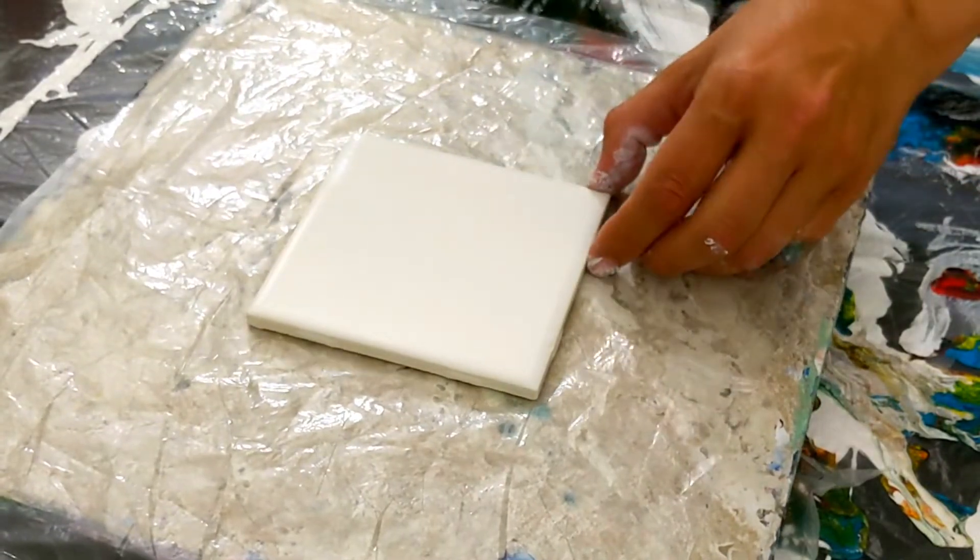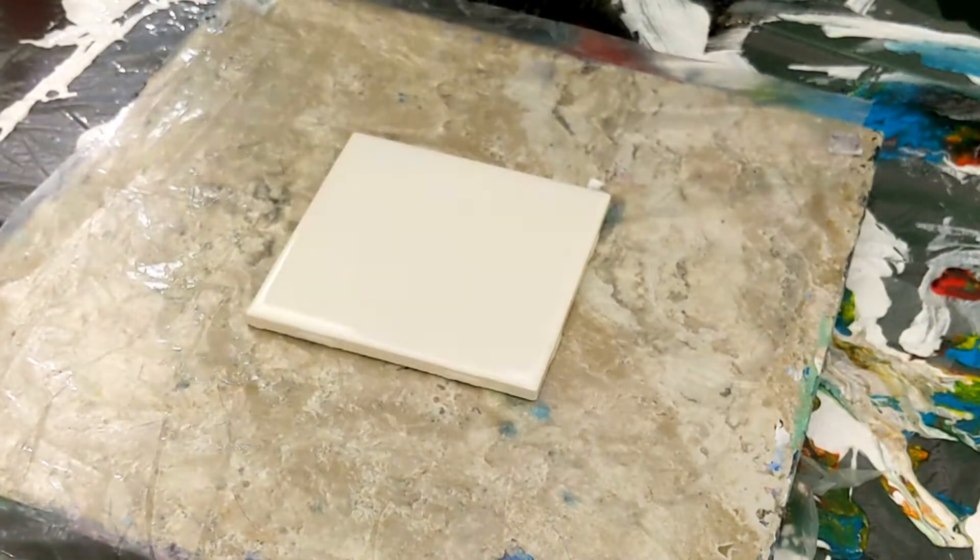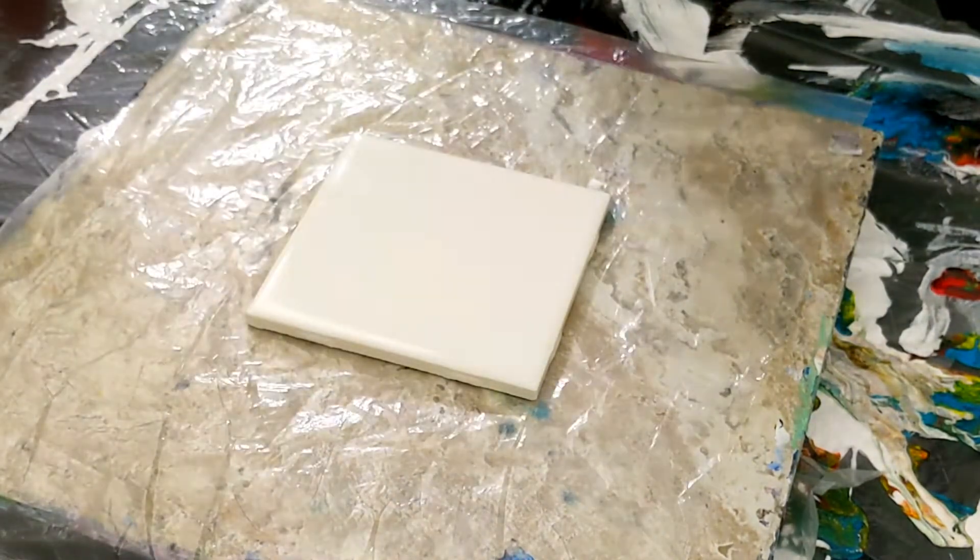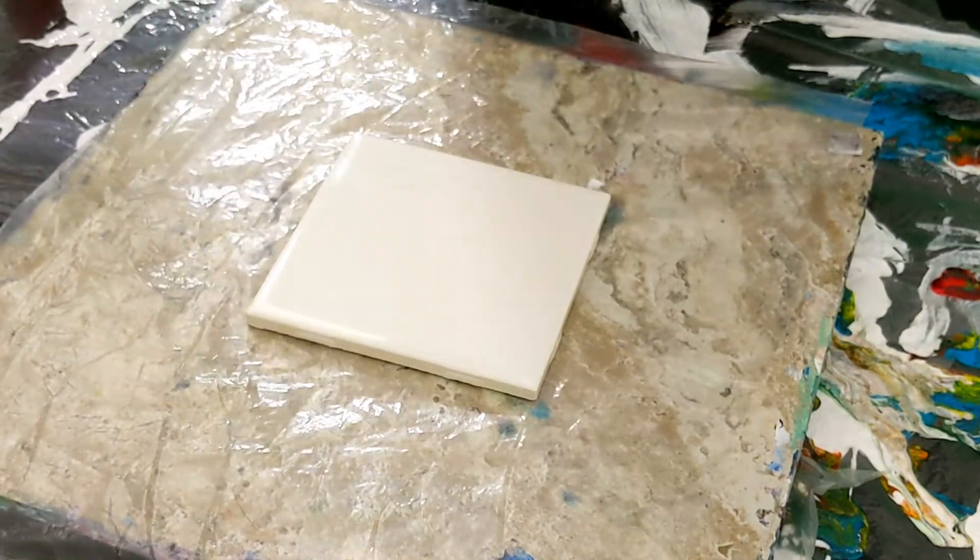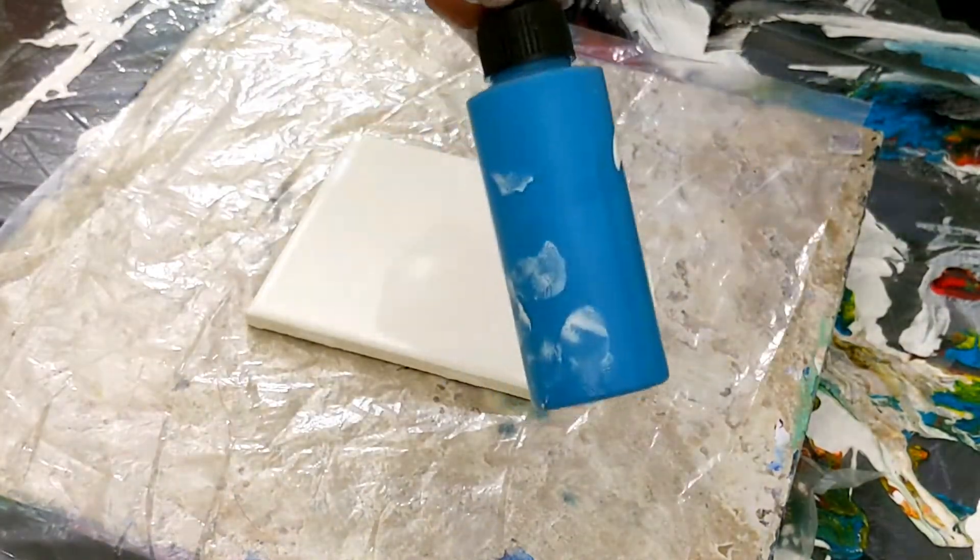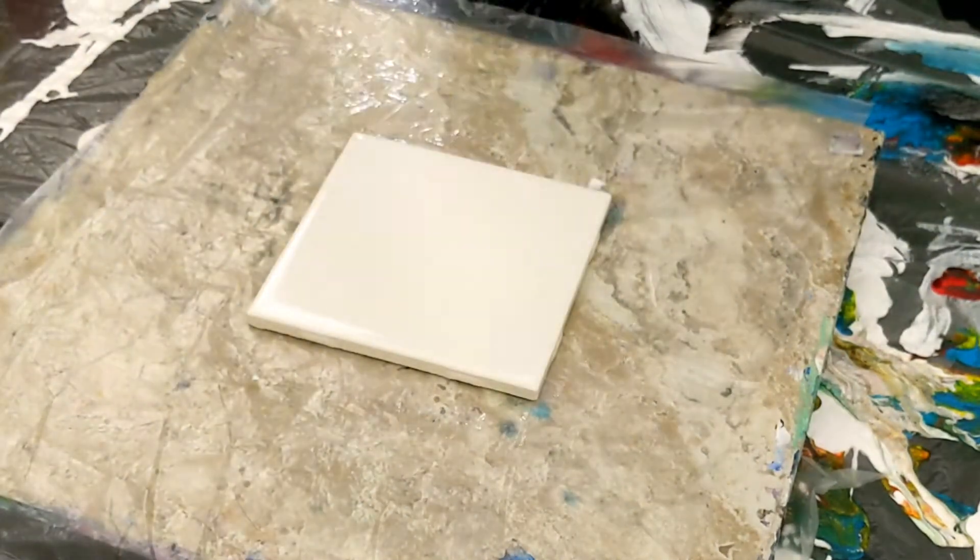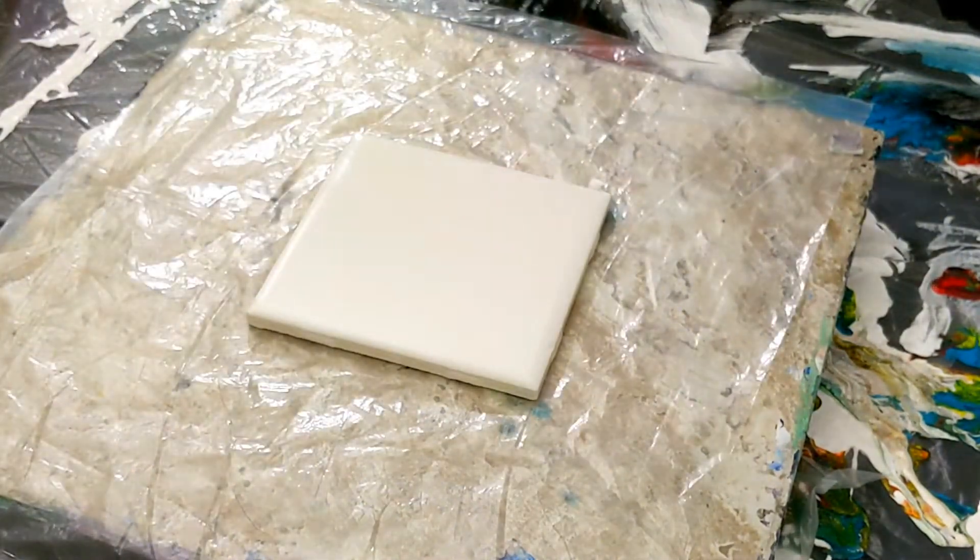But we're gonna go ahead and continue playing with our tiles here because they're a little bit easier to manage. So we are gonna go ahead and use these same colors: the bright yellow, the bright red, and the teal. We're gonna be using the oxide black from Amsterdam.